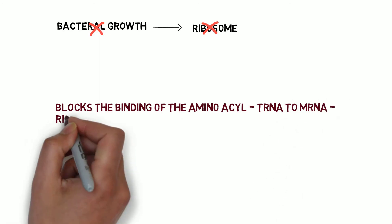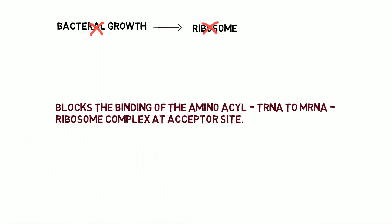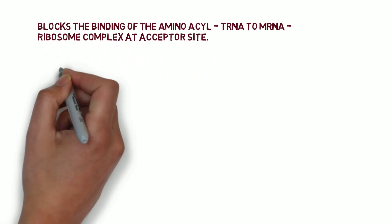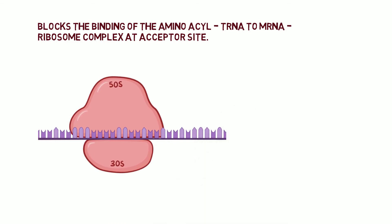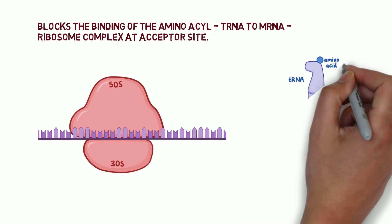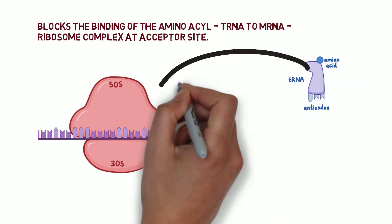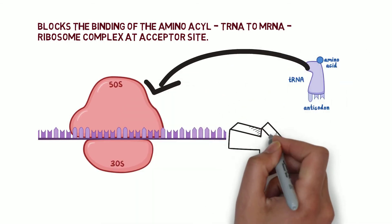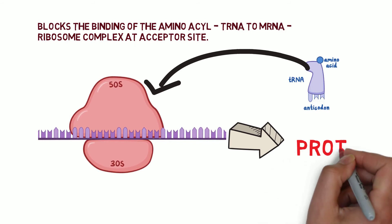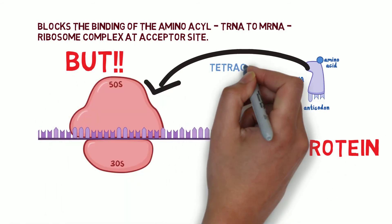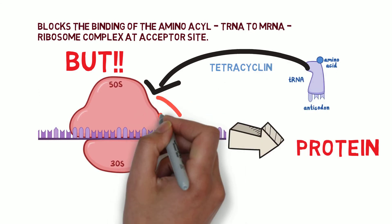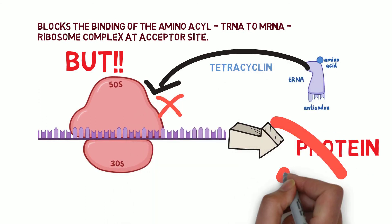Tetracycline blocks the binding of aminoacyl-tRNA to the mRNA-ribosomal complex at the acceptor site. Here, this is the ribosomal mRNA complex — tRNA with its specific amino acid must come and attach to the ribosomal mRNA complex to form protein. But tetracycline inhibits the binding of tRNA with the ribosomal complex, and hence there will be no protein formation.